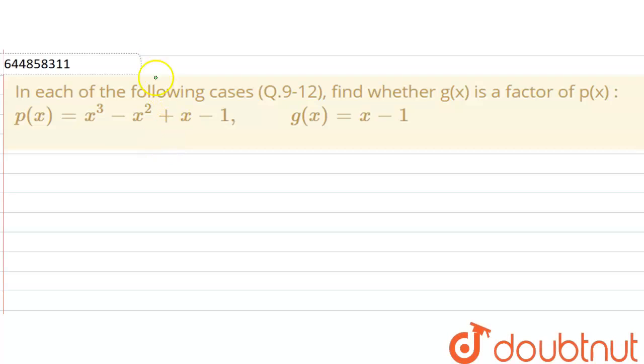Hello students, so here in this question, it is given that in each of the following cases, whether gx is a factor of px. It is given that px is equal to x cube minus x square plus x minus 1, and gx is given as x minus 1.